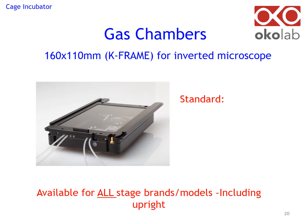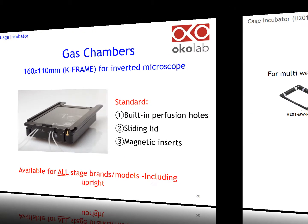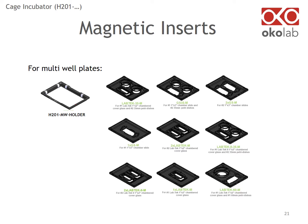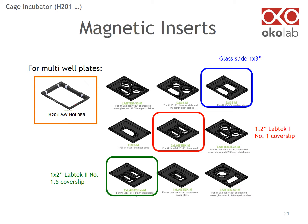Ocolab chambers have built-in perfusion holes, a sliding lid, and magnetic inserts. Inserts are magnetic. For multi-well plates, you will need the holder in the orange box. If you image slides, please specify if they are 1 by 3 inches (blue box), or 1 by 2 Lab-Tek 1-chamber cover slips (red box), or Lab-Tek 2 (green box). Each requires a specific insert — using the incorrect insert will cause the sample to sit improperly and not flat.